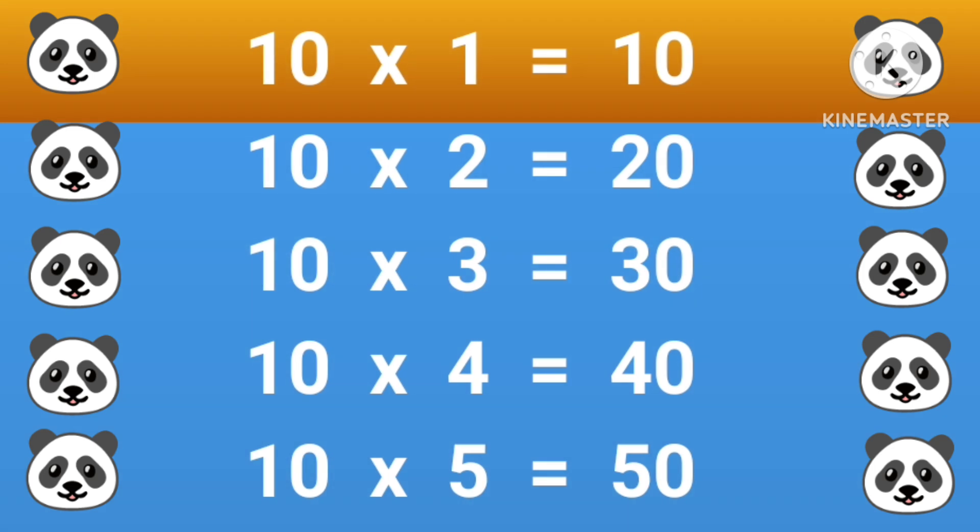10 times 1 equals 10, 10 times 2 equals 20, 10 times 3 equals 30, 10 times 4 equals 40, 10 times 5 equals 50.